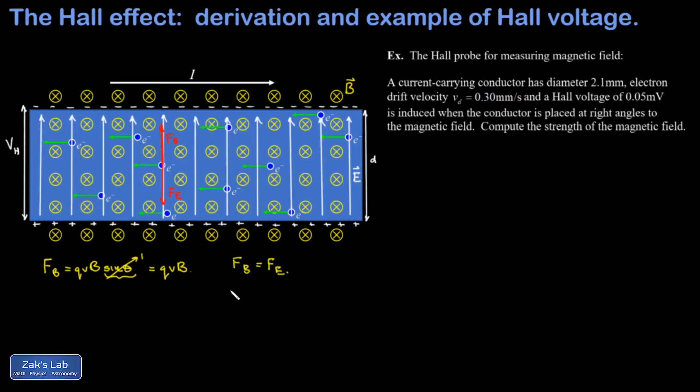The strength of our magnetic force is given by the size of the charge—that's the elementary charge for the electrons—times their average speed, which is the electron drift velocity v_d, times the magnetic field strength B.